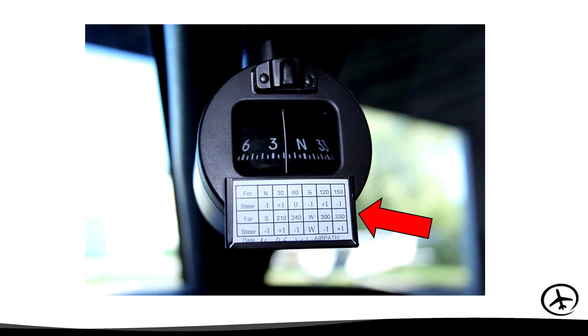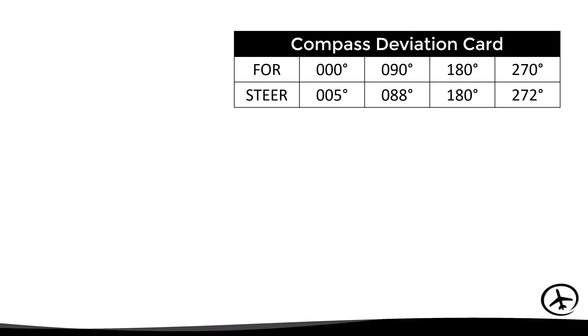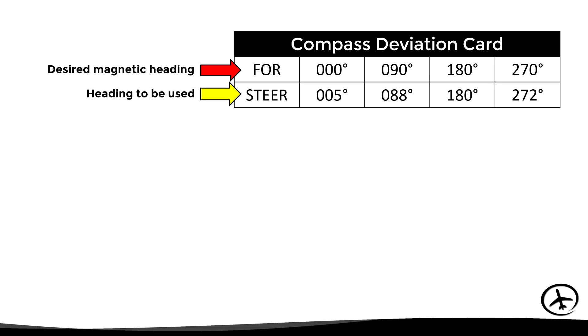This card is normally located next to the compass so it is easily visible to the pilot. In the upper row we find the heading in relation to actual magnetic north; in the lower row, the corresponding heading in relation to compass north. For example, to fly a north heading of 000 degrees, the compass must indicate 005 — a deviation of plus 5 degrees. For heading 090, fly with a compass indication of 088, giving a deviation of minus 2 degrees. For heading 180 the deviation is 0 degrees, and for heading 270 it is plus 2 degrees.